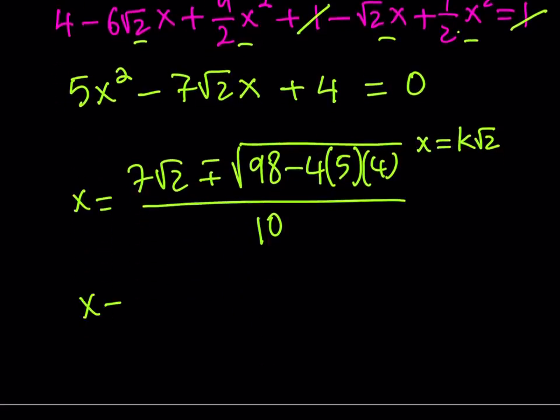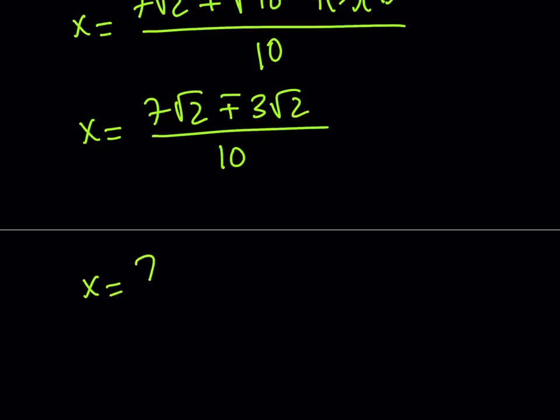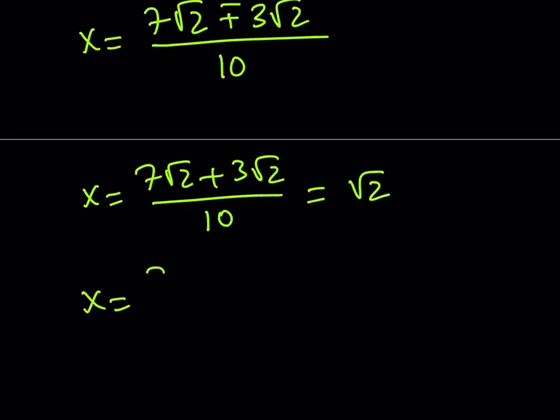I can simplify this. It should be easy. 7 root 2 plus minus—4 times 4 is 16. 16 times 5 equals 80. 98 minus 80 is 18. Square root of 18 is 3 root 2, because it's 9 times 2. So, it's just going to be 3 root 2. Now, at this point, you can just go ahead and split the solutions. One of them is going to be 7 root 2 plus 3 root 2 over 10, which means this is going to be 10 root 2 over 10, which is root 2. That's going to be one of the solutions. The other solution is going to come with the minus sign, and that is going to equal 4 root 2 divided by 10, which is 2 root 2 over 5.